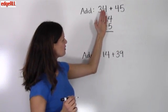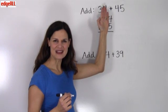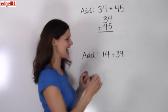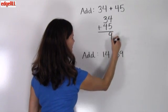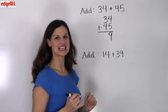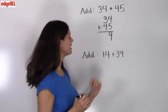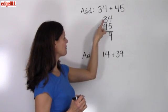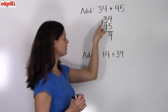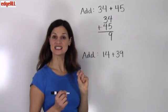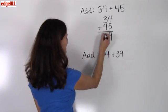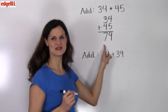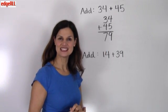Then I start with my rightmost column and add my two digits together. 5 plus 4 equals 9, and I put my 9 right here, nicely lined up with the rightmost column. Then I move over and do the same thing again, simply looking at my 3 and 4. 3 plus 4 equals 7, and I write the answer right below — 34 plus 45 equals 79.